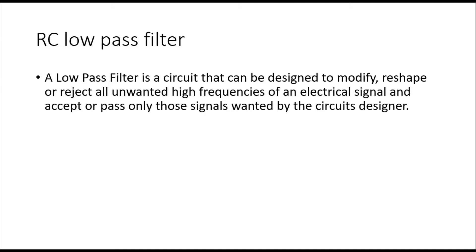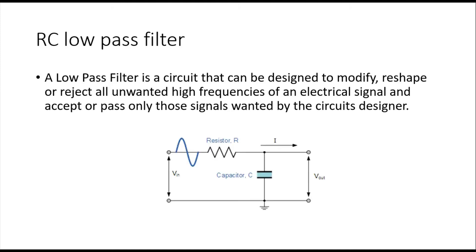Now to understand it clearer, let's have a look at the circuit diagram. This is the circuit diagram of an RC low pass filter. The resistor is connected in series with the capacitor and the output will be measured across the terminals of the capacitor. To understand it clearly we need to know the impedance of the capacitor, which is given by minus j divided by omega·C, where omega is the angular frequency given by omega equals 2πf. Initially when the frequency is very low, the impedance of the capacitor will be very high because the denominator is very low, due to which we can approximate the capacitor as an open circuit.